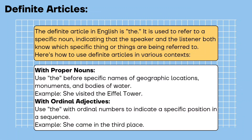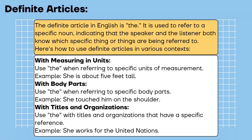With proper nouns: use 'the' before specific names of geographic locations, monuments, and bodies of water. Example: she visited the Eiffel Tower. With ordinal adjectives: use 'the' with ordinal numbers to indicate a specific position in a sequence. Example: she came in the third place. With measuring in units: use 'the' when referring to specific units of measurement. Example: she is about five feet tall. With body parts: use 'the' when referring to specific body parts. Example: she touched him on the shoulder.